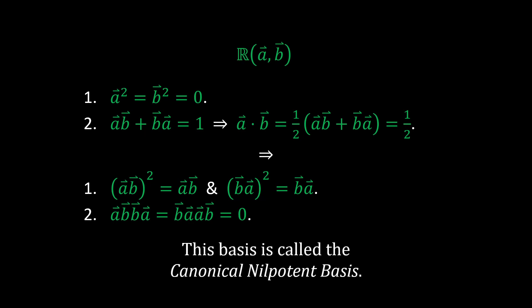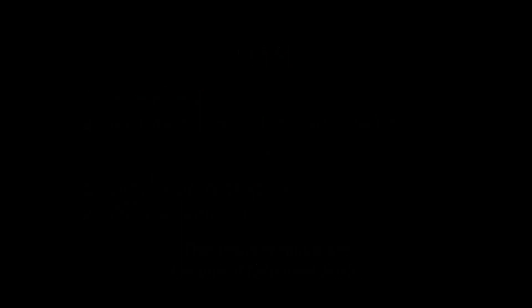This new vector basis used to extend the real numbers is called the canonical nilpotent basis. Using this basis, we can define this extended system.